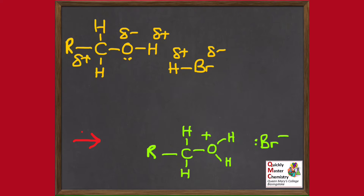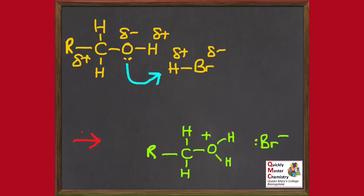So we know what we need to achieve in terms of bonds and charges changing. Let's add the first curly arrow shown in blue. It's pointing towards the hydrogen of the hydrogen bromide — into the space between the oxygen of the alcohol and the hydrogen of the HBr — bringing a pair of electrons into that space to form a bond. A covalent bond is a shared pair of electrons, so to create a new covalent bond you have to supply a pair of electrons into the space between the two atoms. So the first principle is: if a bond has formed, you're going to need an arrow heading into the space between those two atoms.